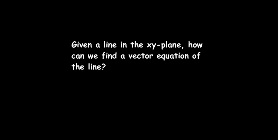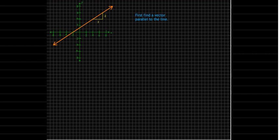Let's start in R². If we're given a line in the xy plane, how can we find a vector equation of the line? Here we have a line and we have information about the rise and the run. We know that the rise is 2 and the run is 3. We'd like to start by finding a vector which is parallel to this line.